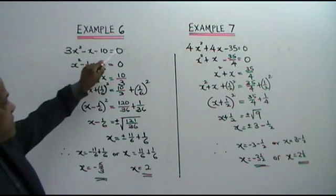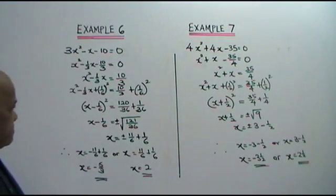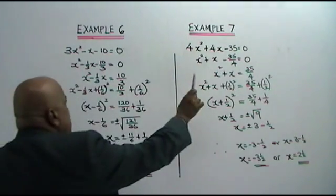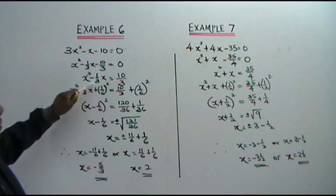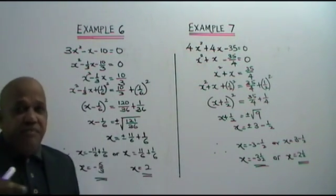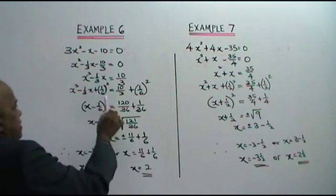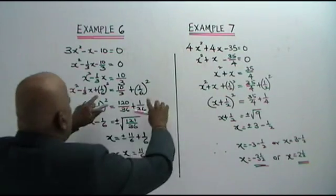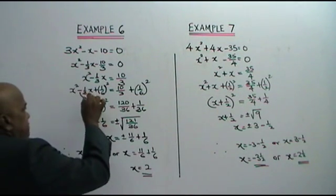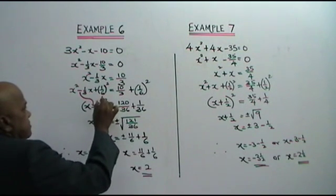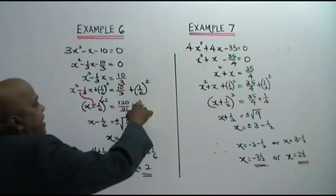First step: divide all the terms by 3. So what do you get? x squared minus 1 over 3x minus 10 over 3 equals to 0. You move negative 10 over 3 to the right — you get 10 over 3. Now, we take the coefficient of x, which is negative 1 over 3. Divide by 2, square it, and add to both sides. When you divide 1 over 3 by 2 and square, you get 1 over 6. So x minus 1 over 6 squared equals to 120 over 36 plus 1 over 36.